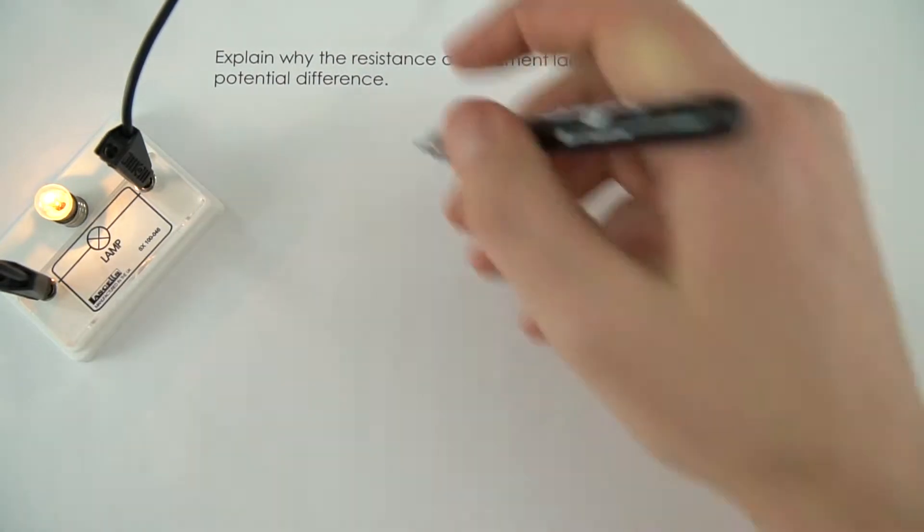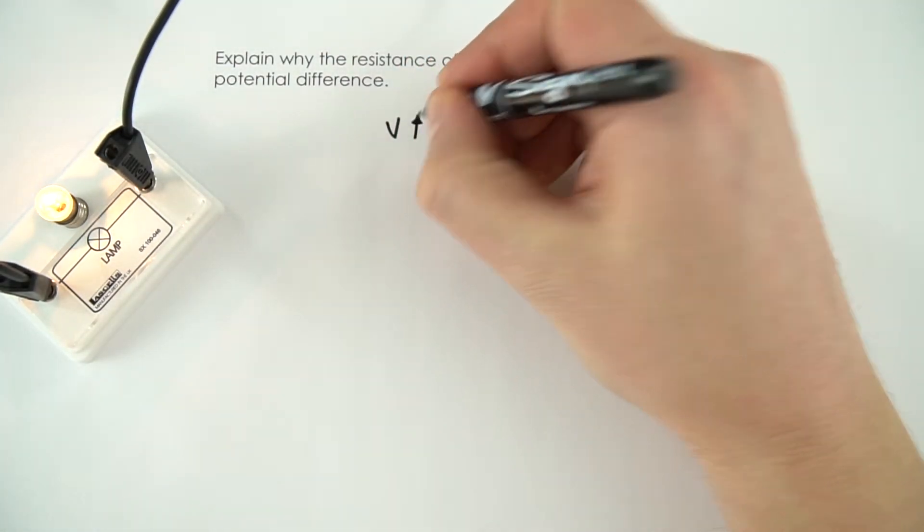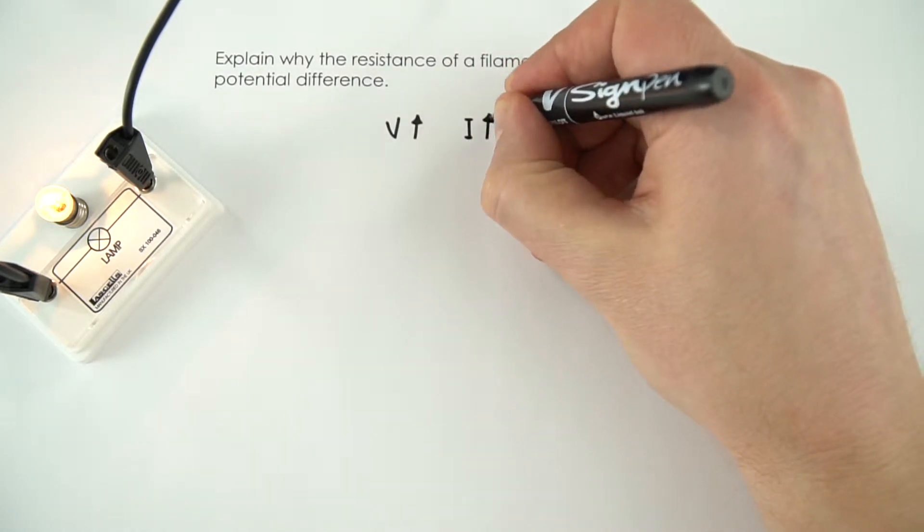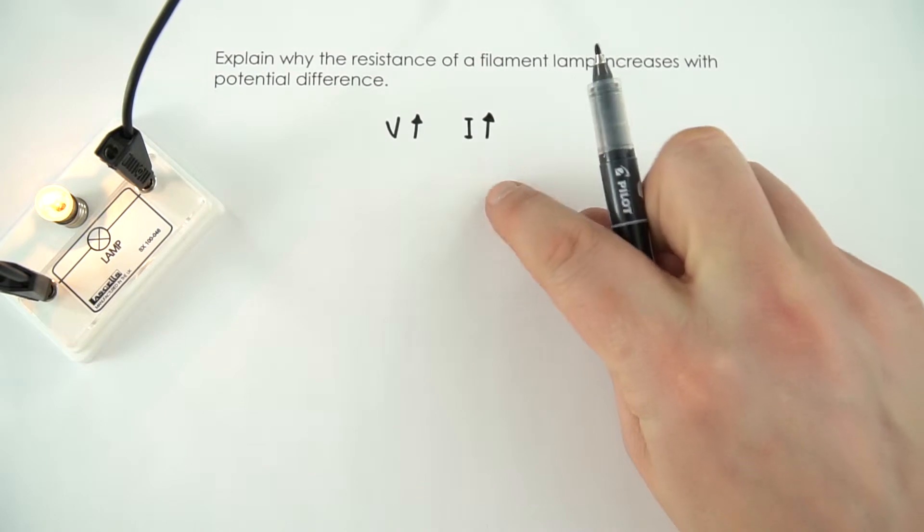Basically what happens is as the potential difference increases, this means that the current flowing through the filament in the top of that lamp also increases.